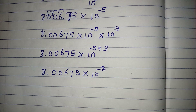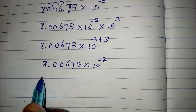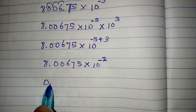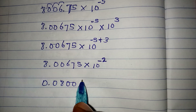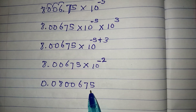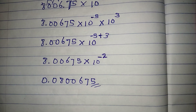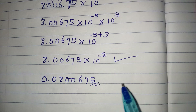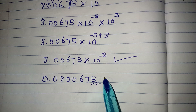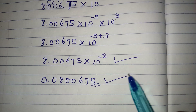So the answer in standard form is 8.00675 times 10 to the power of negative 2. If you want to convert from standard form, you get 0.0800675. You can leave your answer in standard form or in decimal form. Thank you for watching.